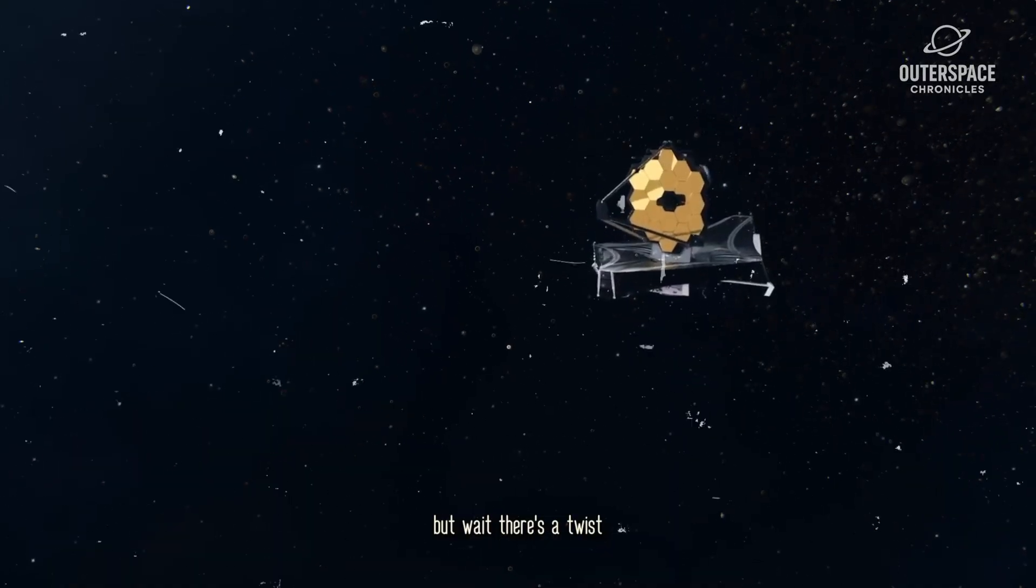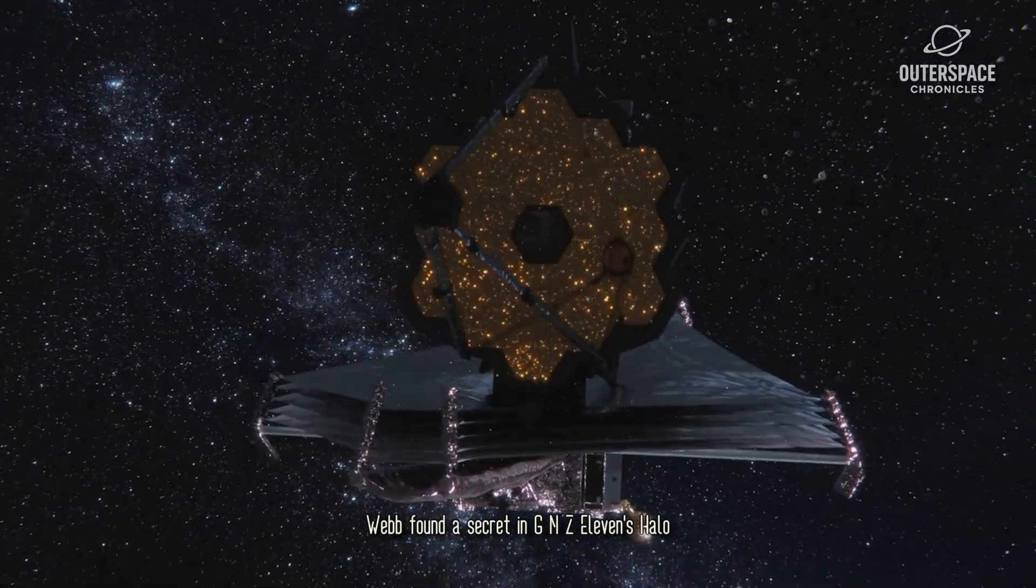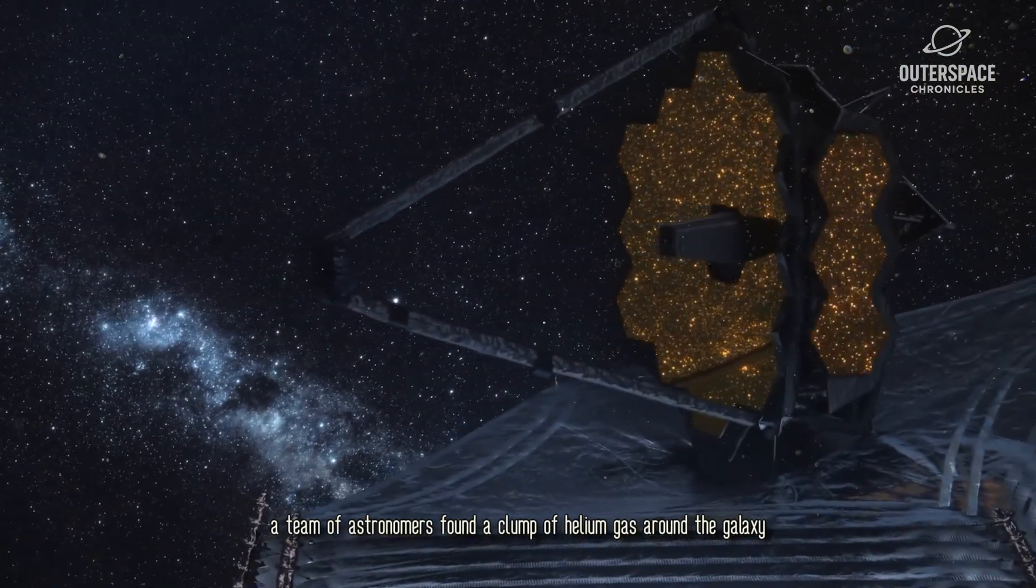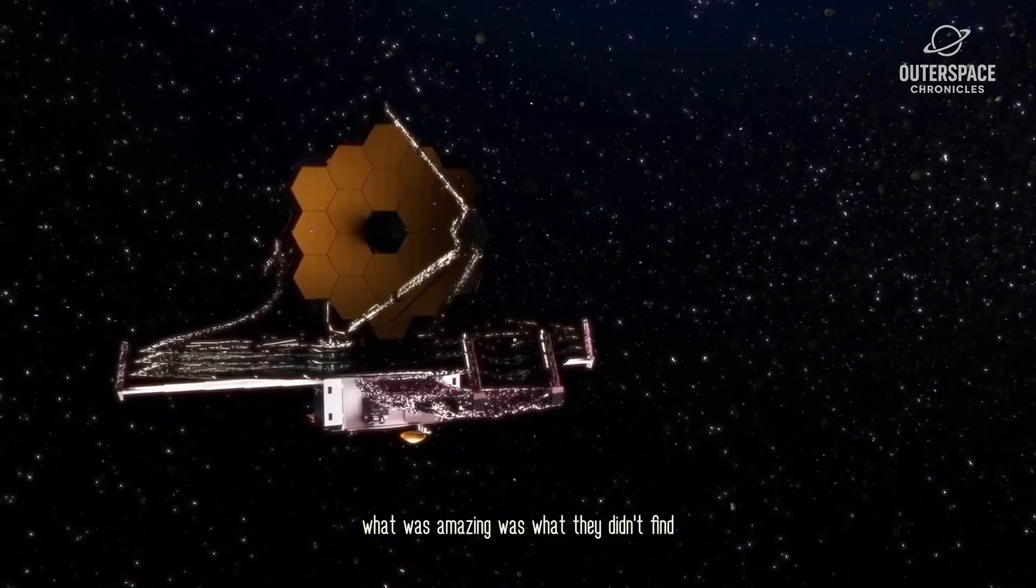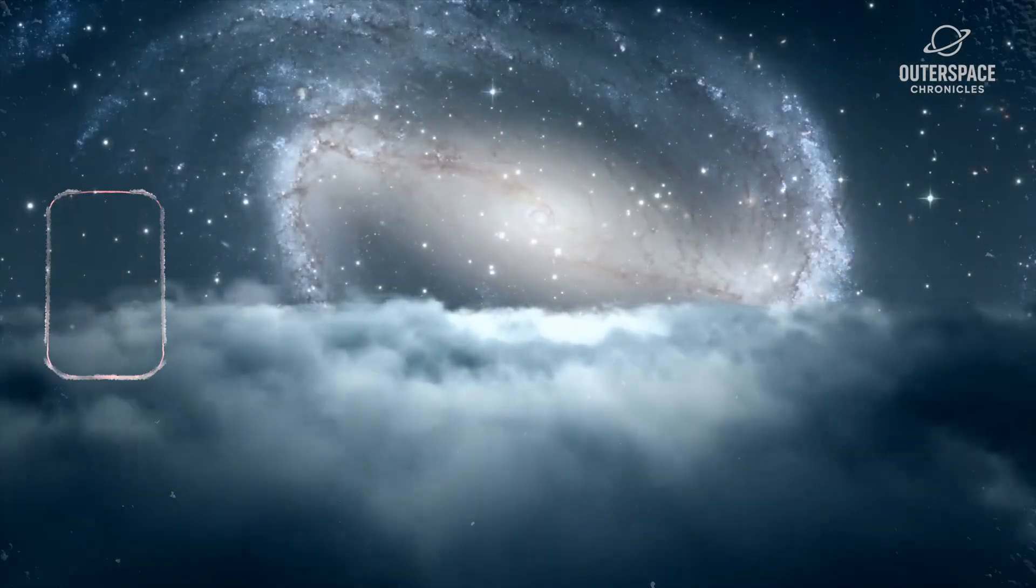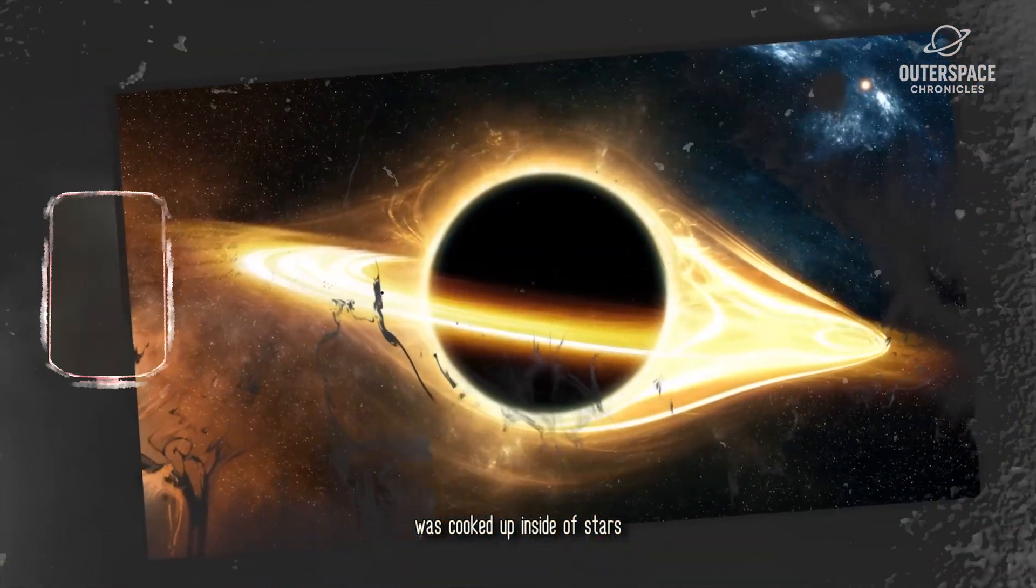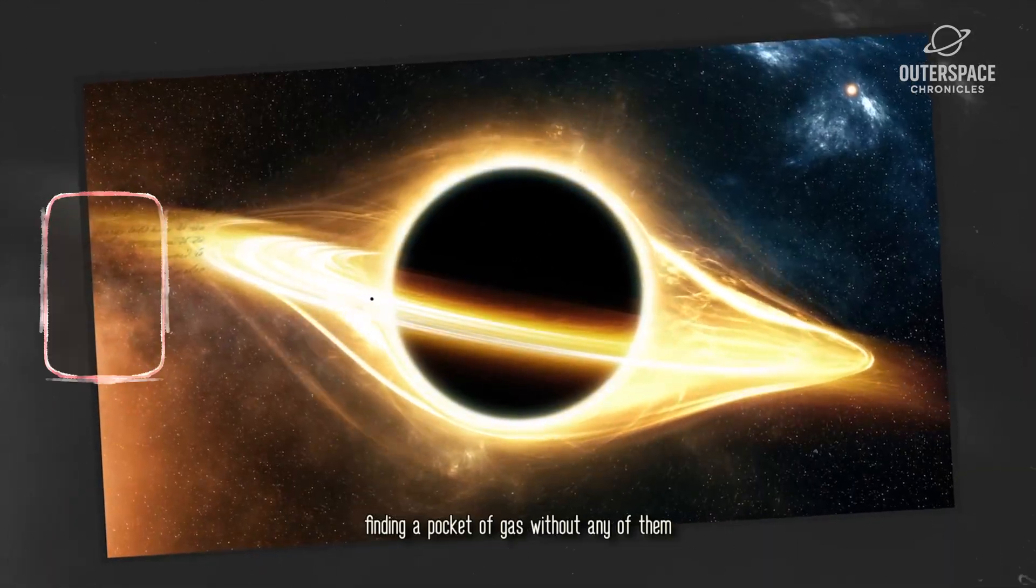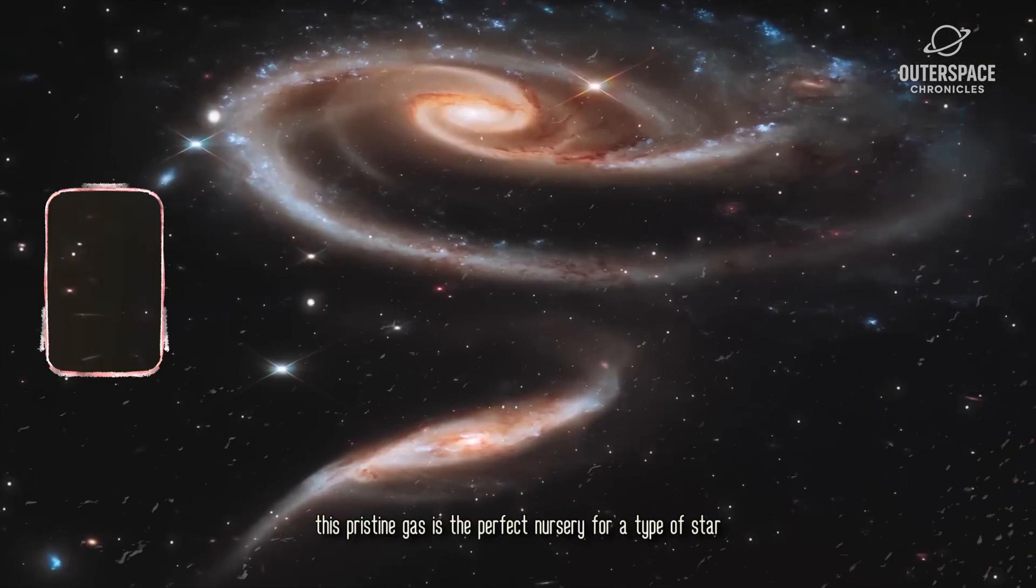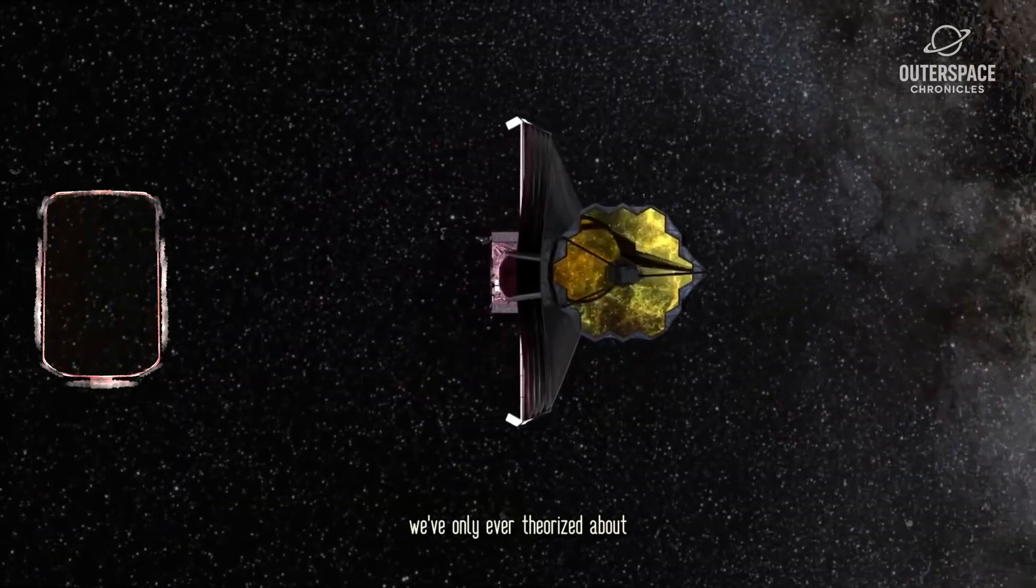But wait, there's a twist. As if rewriting the book on black holes wasn't enough, Webb found a secret in GNZ11's Halo. A team of astronomers found a clump of helium gas around the galaxy. What was amazing was what they didn't find. Any elements heavier than helium, which astronomers just call metals. This is huge. Every element heavier than hydrogen and helium was cooked up inside of stars. Finding a pocket of gas without any of them means we are looking at pure, primordial material left over from the Big Bang. This pristine gas is the perfect nursery for a type of star we've only ever theorized about.